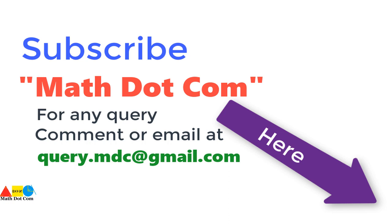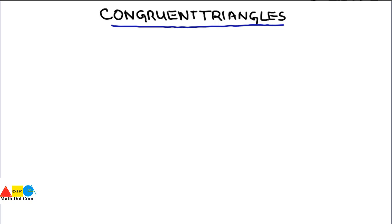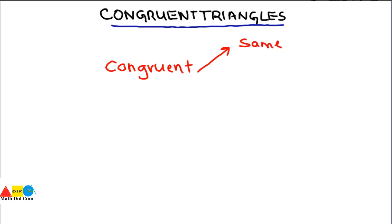Please subscribe to math.com; for any query, comment or email. Today we will discuss the concept of congruent triangles. Before that, let's see what is meant by congruent. The word congruent has multiple meanings — it means same or identical, or coinciding in terms of shape.